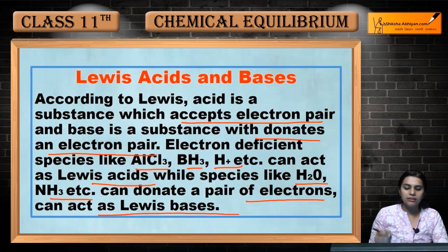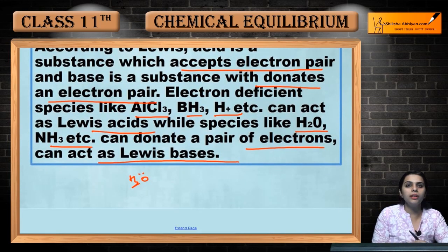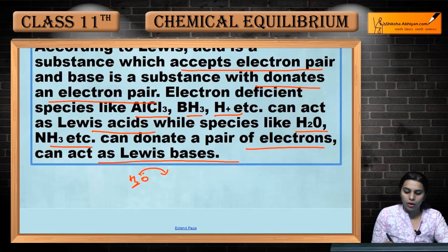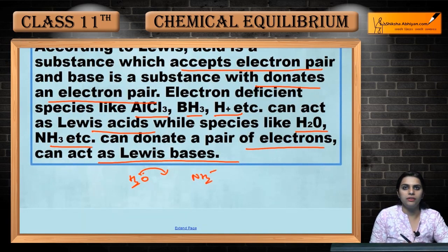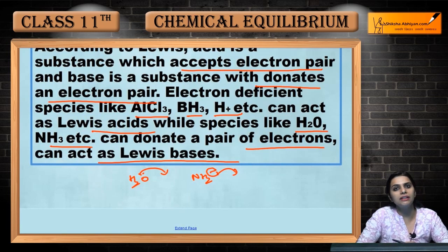Species like H₂O, NH₃, etc. can donate a pair of electrons and can act as Lewis bases. H₂O has lone pairs which it can donate, so it acts as a base. NH₂⁻ — a negative charge is also a representation of lone pair and extra electrons — so it can also donate its electrons and will be considered a base.